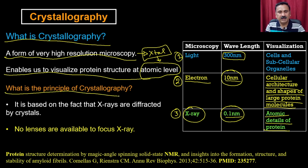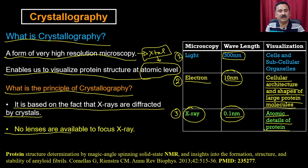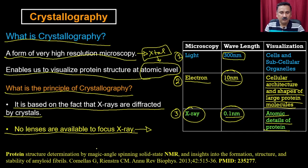What is the principle of X-ray crystallography? It is based on the fact that X-rays are diffracted by crystals. The difference between conventional microscopy and X-ray crystallography is that there is no lens involved, which means you cannot just visualize the object with X-rays the way we visualize cells or subcellular structures on a slide. If you are interested in studying X-ray crystallography more, you can go through this particular article.